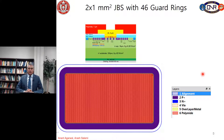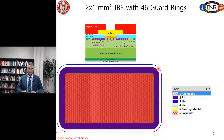This slide shows a cross-sectional view along with the top view of all masks in a 2 mm square JBS diode, including 4 to 6 guard rings in the periphery of the device. We have the N+ region for the channel stop after 50 micrometers distance from the last guard ring. The polyimide is aligned to the P+ regions as discussed in the previous lecture.